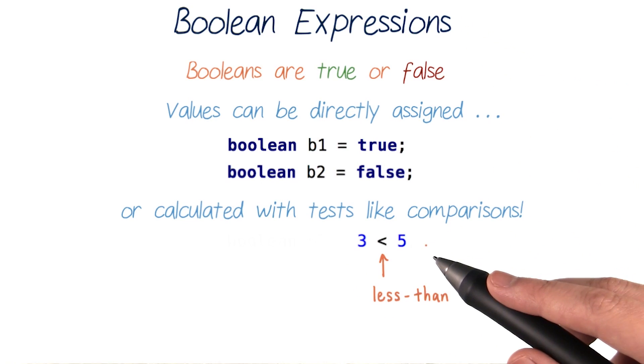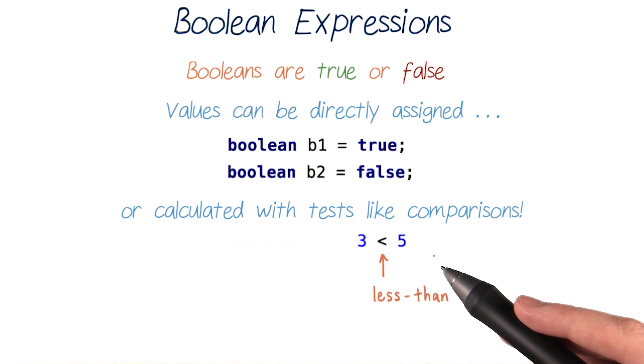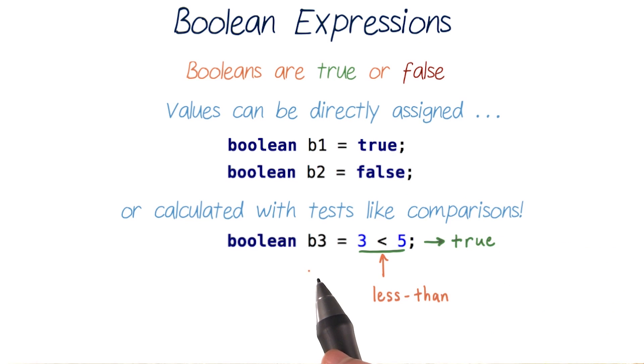Expressions look something like this. This expression, which checks if 3 is less than 5, is something we know is true. 3 is less than 5, and in fact, this expression evaluates to the boolean value of true. And we can assign that value to a boolean variable like before. Let's name this one b3.